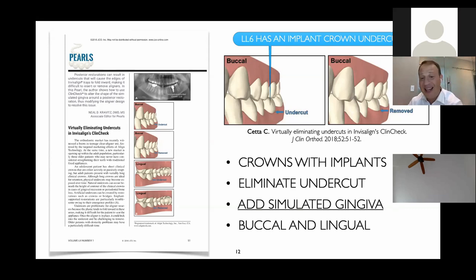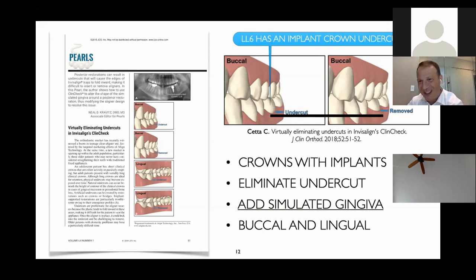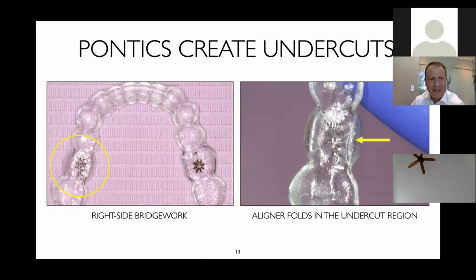If you have a patient with crowns, implants, or pontics, eliminate the undercut by asking Invisalign on your ClinCheck to create simulated gingiva that is higher — you want to shorten that clinical crown. He's just lifting that gingiva a little bit to prevent the undercut in the aligner material. The key is that he's doing this both on the buccal and the lingual — most people forget to do it on both sides. By creating a simulated gingiva, the aligner fits properly — a subtle, simple pearl.